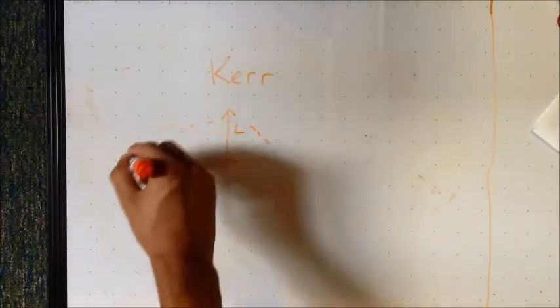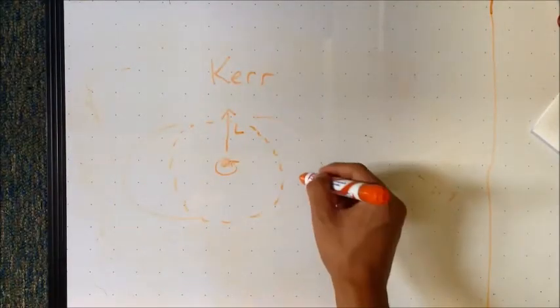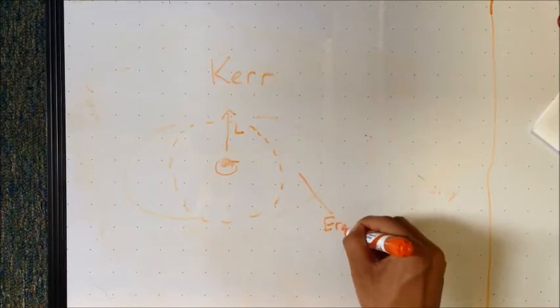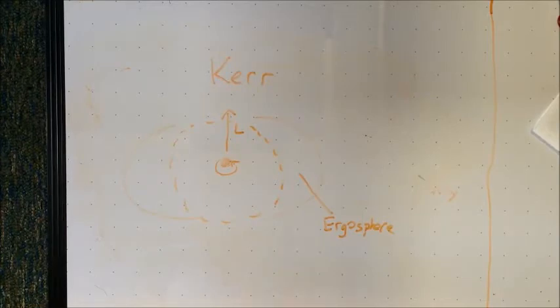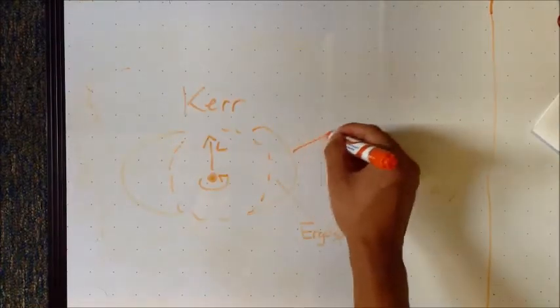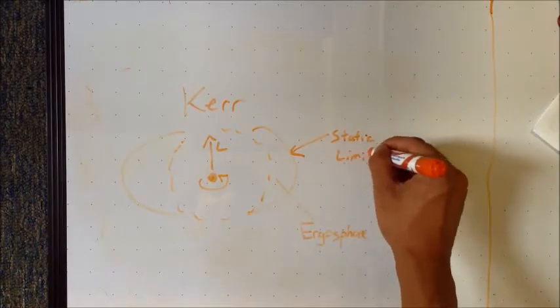So, an object falling toward the black hole may feel like it is descending directly towards the center, but it will actually be dragged along in the direction of rotation along with the rest of the surrounding space-time. The ergosphere is a region in which a frame-dragging effect can be felt. Finally, the static limit denotes the boundary between the ergosphere and space.